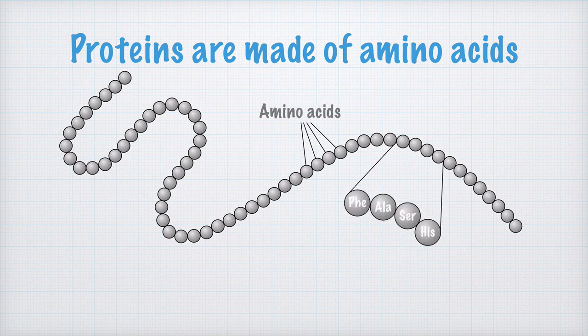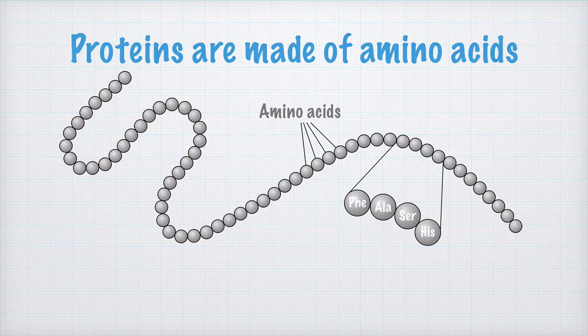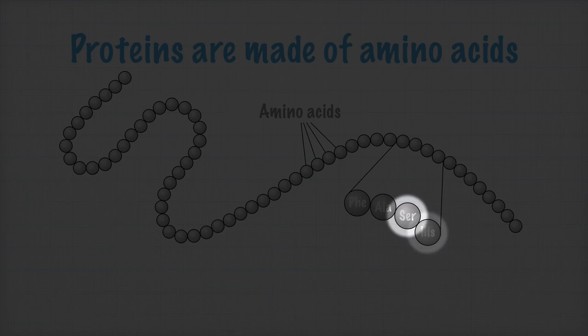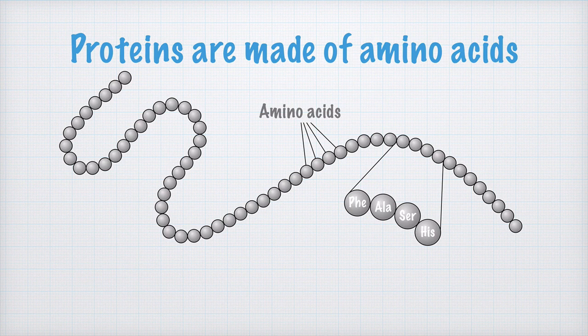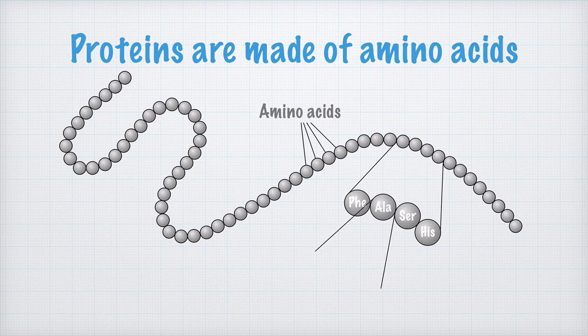Here I have some examples of amino acids: PHE stands for phenylalanine, ALA for alanine, CER for serine, HIS for histidine. You don't need to learn the chemical structure for an amino acid until you study chemistry, but I still want to show you what an amino acid looks like.